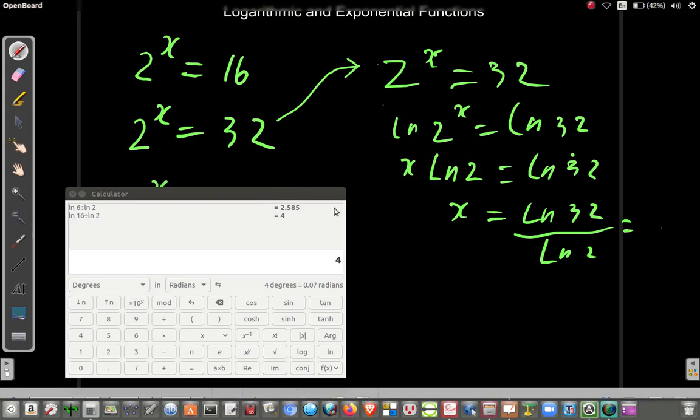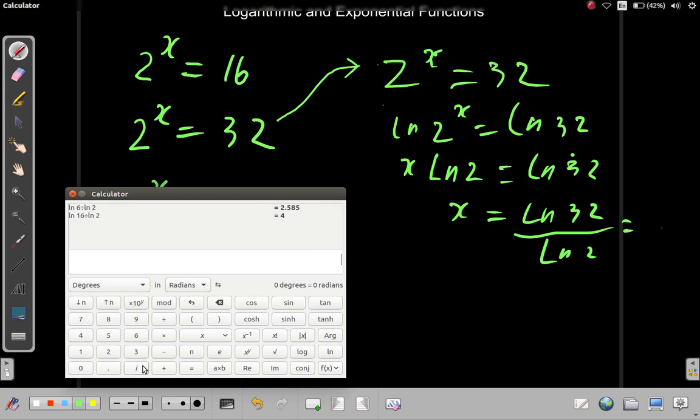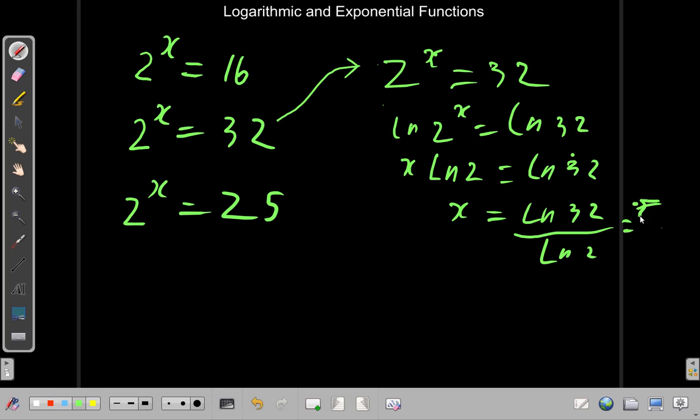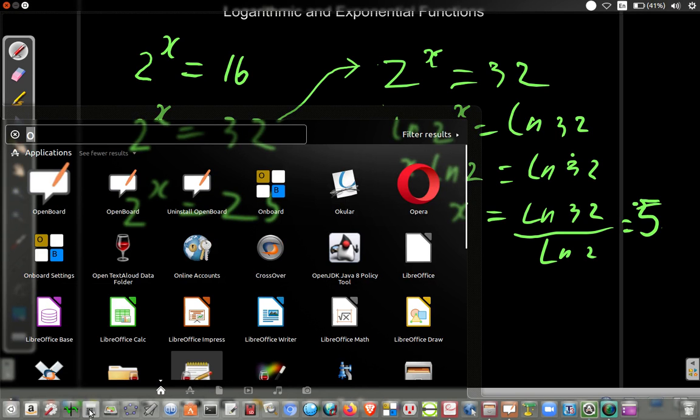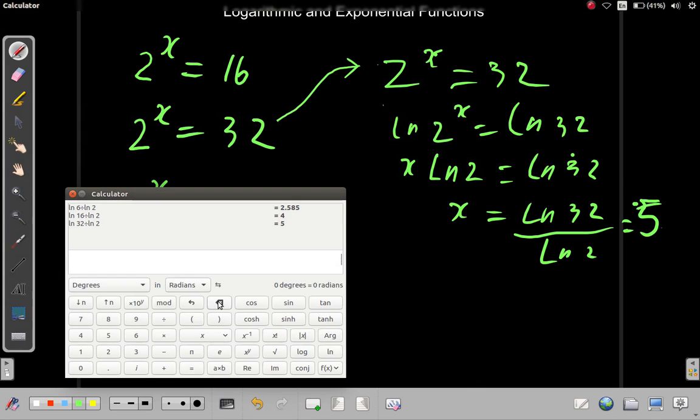So, what we have is ln 32 divided by ln 2, and we get 5. So, we get 5 for our answer. The thing is, you could very well also use common logs. ln 32 divided by ln 2, and you get 5 just the same.